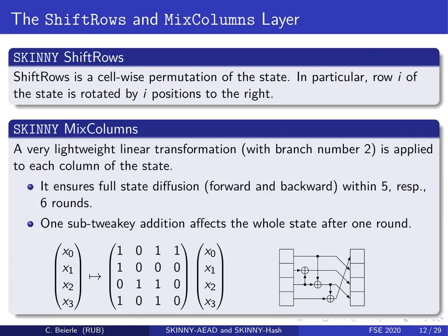The linear layer is very similar to AES. Shift rows is a cell-wise permutation of the state where row i is rotated by i positions to the right — in AES this rotation is to the left, which is the only difference. A mixed columns operation operates on every column of the state independently with a linear transformation of branch number two, ensuring full state diffusion in both forward and backward direction within at most six rounds. Moreover, one sub-tweakey addition will affect the whole state after one round, guaranteed by the mixed columns operation — important because the tweakey is only added to half of the state.